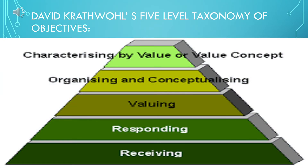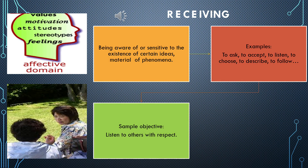David Krathwohl 1972 proposed a five-level taxonomy of objectives: first is receiving, second is responding, third is valuing, fourth is organizing, and lastly, characterizing by value. In receiving, the student is passively aware that a thing exists. It is focused during instruction or a project — being aware of or sensitive to the existence of certain ideas, material, or phenomena. The verb examples are: to accept, to ask, to choose, to describe, to follow, and so on.